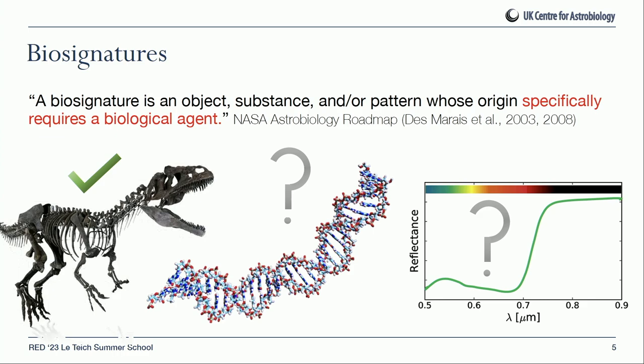These latter two may not be unambiguous biosignatures. Maybe DNA formed abiotically before the origin of life, in which case a DNA molecule by itself doesn't necessarily require a biological agent. Maybe features like the vegetation red edge can appear in the reflectance spectrum of a planetary body due to minerals — semiconductor minerals have quite a similar reflectance profile. So although these things may or may not be good evidence for life in a certain context, we shouldn't assume they necessarily require a biological agent.